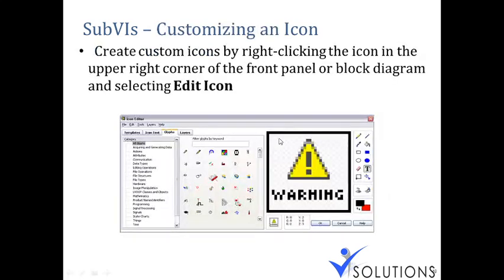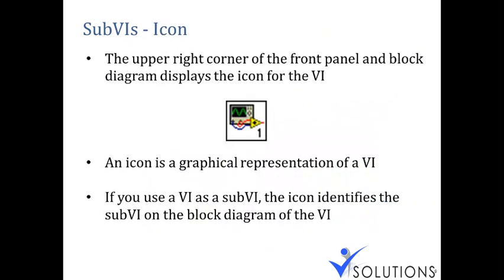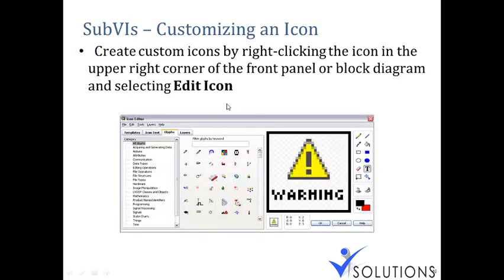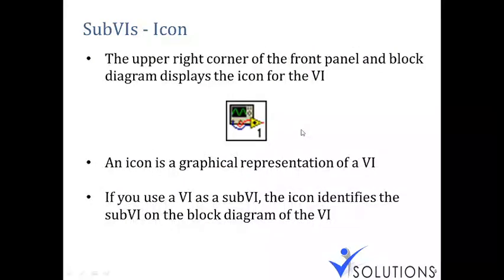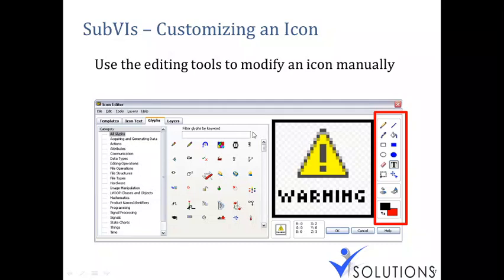To customize the icon, right-click on the icon in the front panel and choose Edit Icon. The icon editor will pop up allowing you to edit it. On the right side you'll find editing tools to modify your icon. You can also use Glyphs — a library of images you can simply click to apply. You can use graphical information or textual information, set colors, font size, and alignment. It's similar to using a paint program.